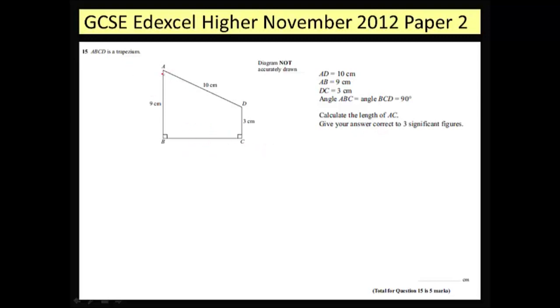I need to work out the length from A which is here to C which is down here. So if I just draw that onto my diagram I can see that AC is there. Now this is a right angle triangle ABC but to do this I would need to know the value of BC. So this is actually going to be a double application of Pythagoras.